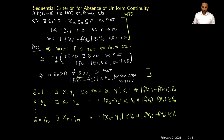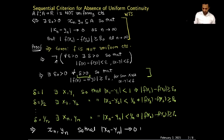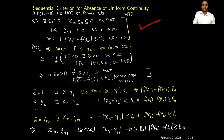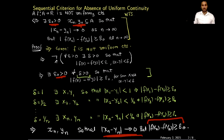Summarizing this construction: we have found two sequences xn and yn so that the difference between xn and yn is going to 0, but the difference between f of xn minus f of yn is always greater than or equal to epsilon. This is what we wanted to show — we found one epsilon and two sequences xn and yn such that the difference between them goes to 0 but the difference between f of xn and f of yn is always greater than or equal to epsilon.